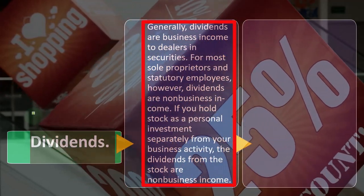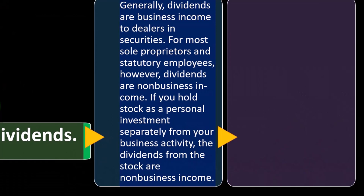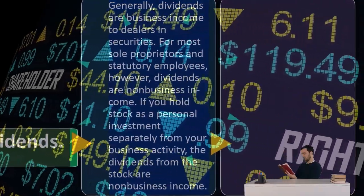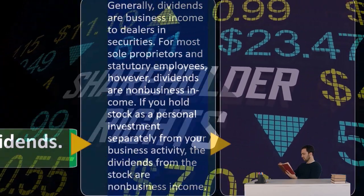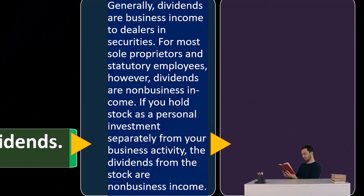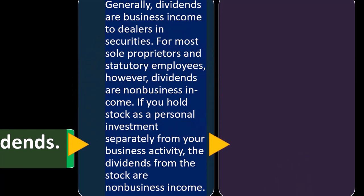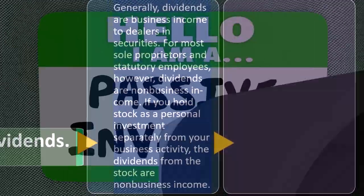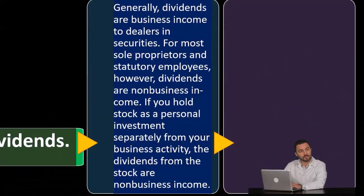Dividends are generally business income to dealers in securities. If you are a shareholder of a corporation — which is a separate legal entity — the corporation breaks out ownership into equal shares and distributes earnings in the form of dividends. For most people who are passive investors investing in companies, dividend income would be passive income and not business income.